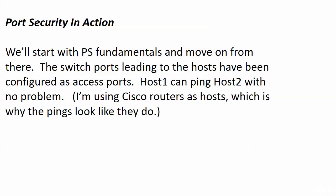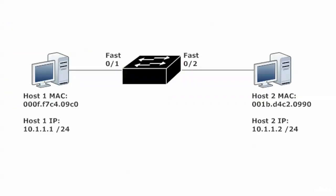Now we're going to start seeing port security in action, starting with the fundamentals. The switch ports leading to the hosts have been configured as access ports — I've already taken care of that. Host 1 can ping host 2 with no problem. I'm using Cisco routers as our hosts, which is why the pings look like they do. You can see the MAC addresses and IP addresses assigned to each host — we may use all this information or we may not. When we pick up at the beginning of the next video, we'll dive into our first port security lab.